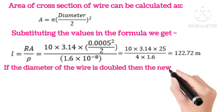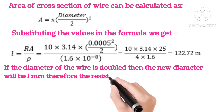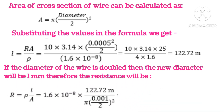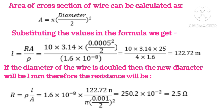If the diameter is doubled, then the new diameter will be 1 mm. Therefore, the resistance will now be, putting in the values in the formula, we get R equals 2.5 ohm.